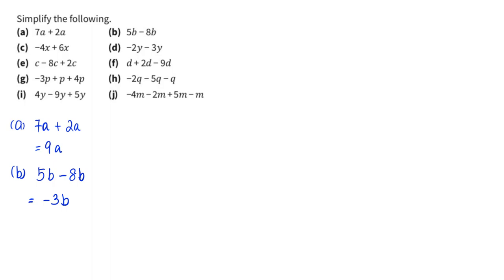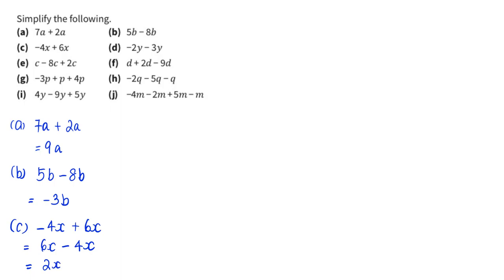For part c: negative 4x with 6x. So it's negative 4 plus 6, or you could also see it as 6x minus 4x. Altogether I will have 2x.